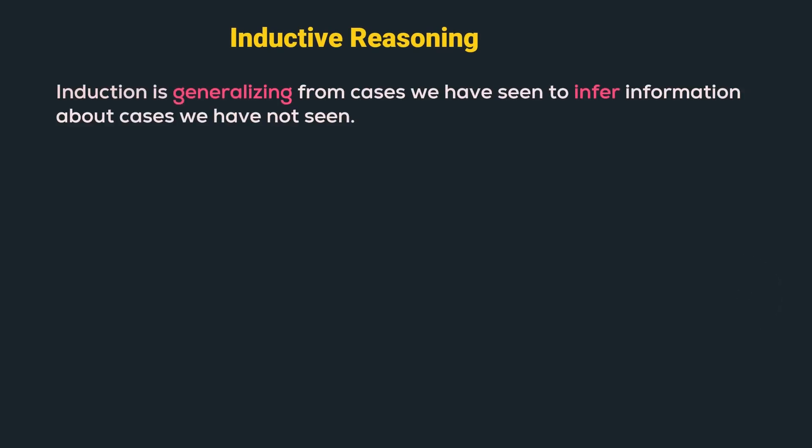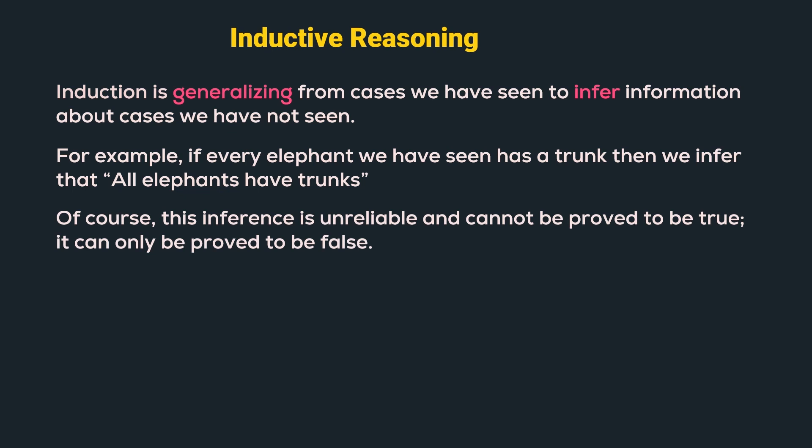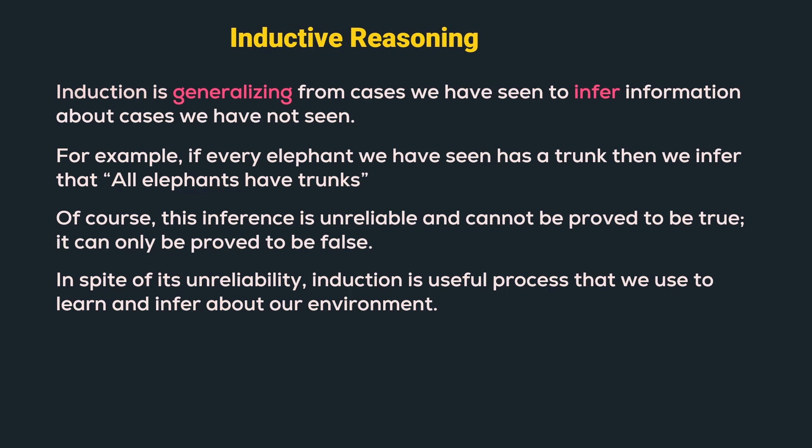Induction is generalizing from the cases we have seen to infer information about the cases that we have not seen. For example, if every elephant we have seen has a trunk, then we infer that all elephants have trunks. However, it is not possible to see all the existing elephants. Hence, this inference is unreliable and cannot be proved to be true. It can only be proved to be false if we come across an elephant without a trunk. In spite of its unreliability, induction is useful process that we use to learn and infer more about our environment.